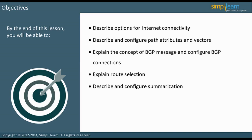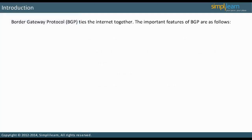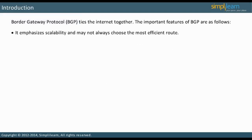Let us start our discussion on BGP. Border gateway protocol, BGP, ties the Internet together. It emphasizes scalability and may not always choose the most efficient route. BGP is an exterior routing protocol and differs greatly from the interior gateway protocols, IGPs, that we have studied to date.